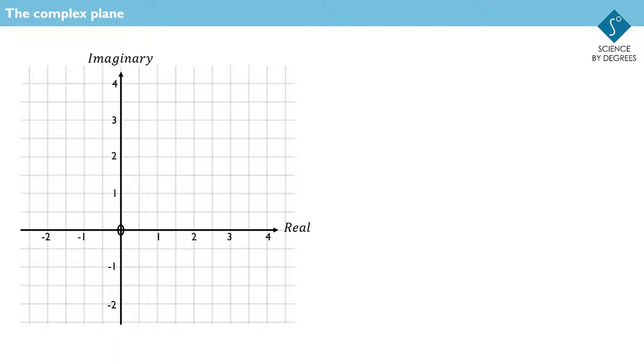On the complex plane, sometimes called the Argand diagram, this point at coordinates has a real part, 3, and an imaginary part, 4. It represents the complex number 3 plus 4i.